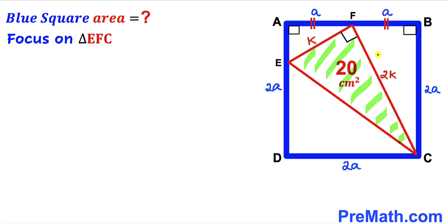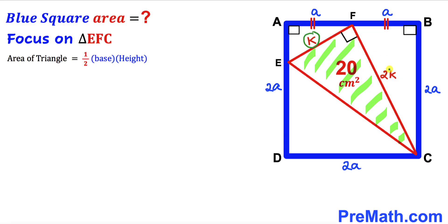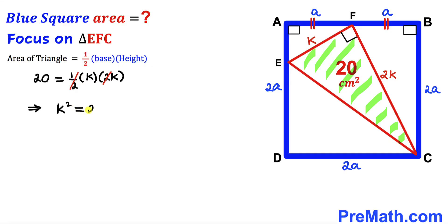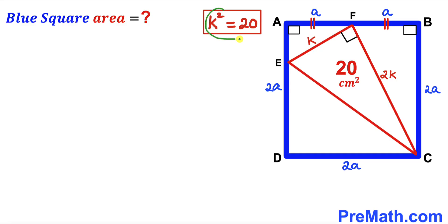Now we focus on right triangle EFC. The area has been given as 20 cm². Recalling the area of a triangle formula: area equals one-half times base times height. The base is k and the height is 2k. So area equals one-half times k times 2k, and the 2 and one-half cancel, giving us k² equals 20.